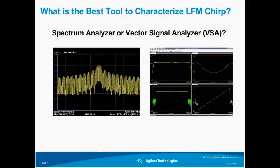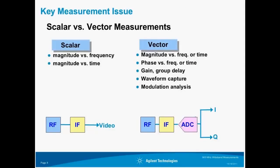So what's a better choice for measuring radar signals — the spectrum analyzer on the left, or the vector signal analyzer? The spectrum analyzer only displays a view of the signal's frequency and amplitude. Frequency versus time information is not available. Since the LFM chirp frequency changes linearly with time, we need an instrument that can characterize how the signal's frequency changes with respect to time. This is a perfect application for the vector signal analyzer. The classic spectrum analyzer makes a scalar measurement, such as magnitude versus frequency and magnitude versus time in zero span.